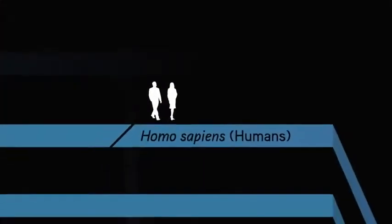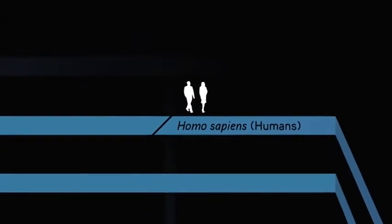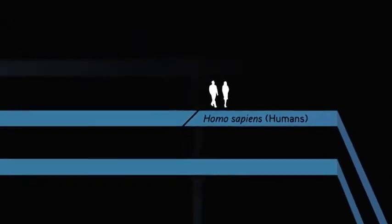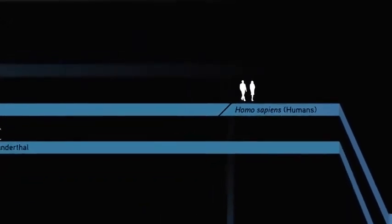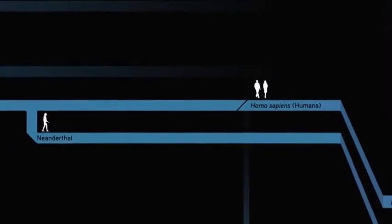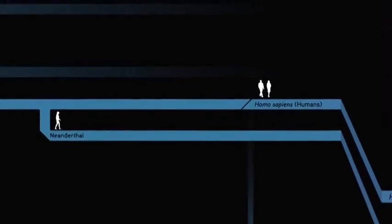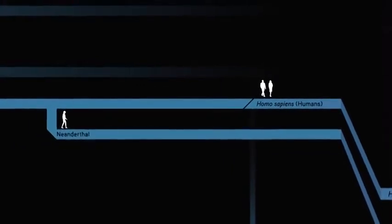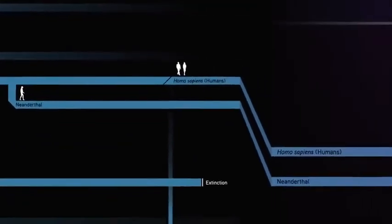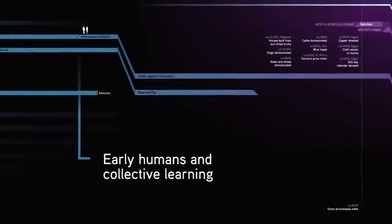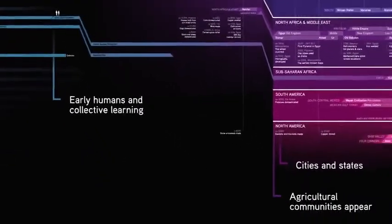It goes back to the time of Homo habilis. But we're focusing on Homo sapiens. So for us, the Paleolithic era begins when Homo sapiens first appeared, somewhere between 200,000 and 60,000 years ago, and it ends with the appearance of agriculture about 10,000 years ago.